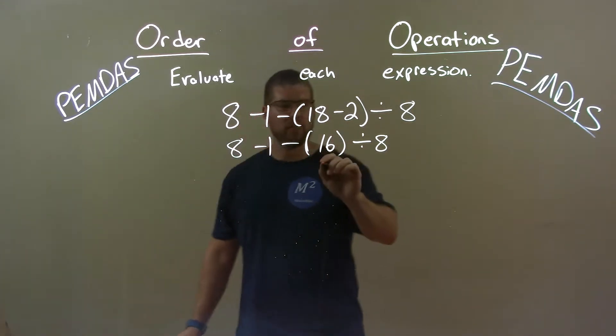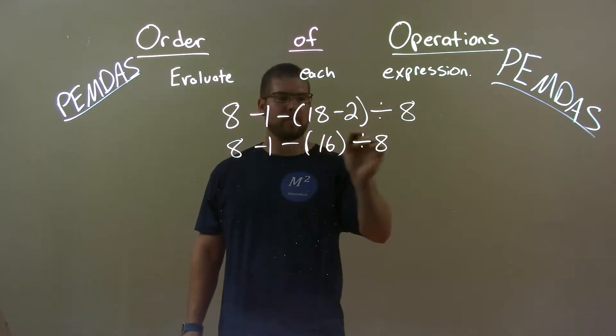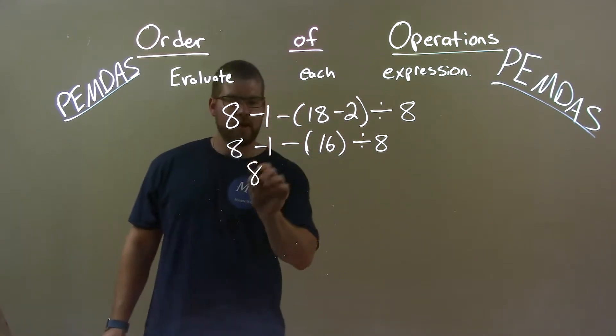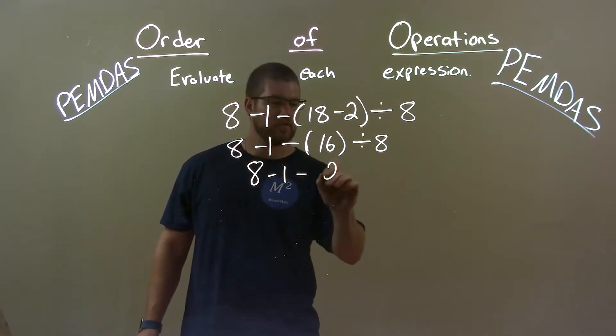Next order. We're done with the parentheses, but we have division. 16 divided by 8 is 2. So we have 8 minus 1 minus 2, okay?